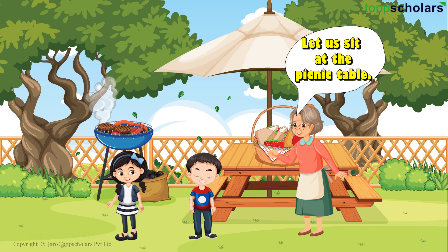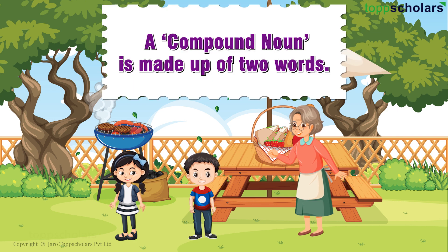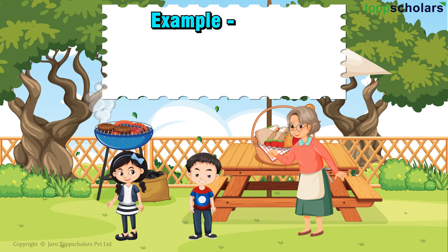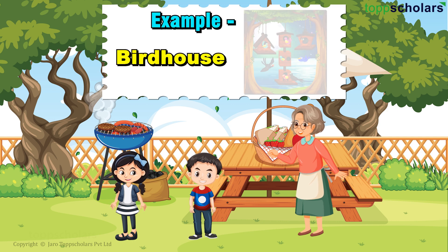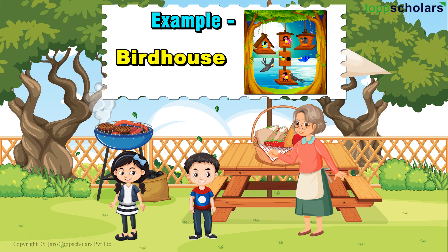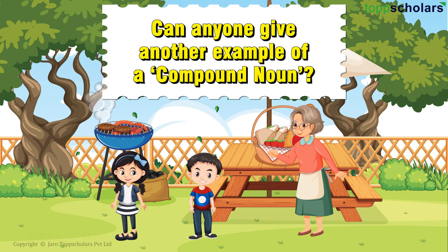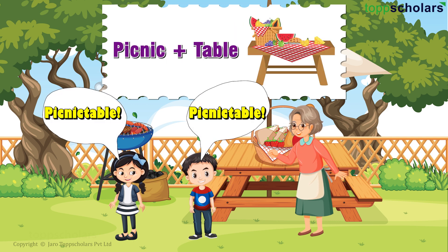Let us sit at the picnic table. A compound noun is made up of two words. For example, a bird house. Can anyone give another example of a compound noun? Picnic table.